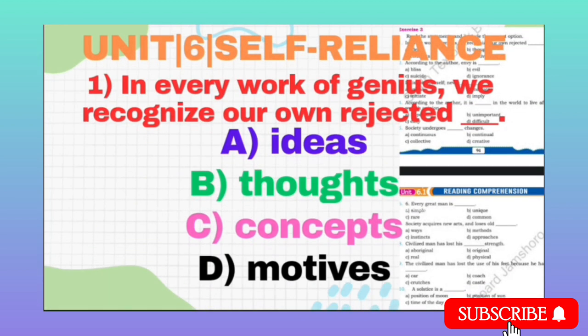MCQ number 1 is: 'In every work of genius, we recognize our own rejected...' — it means in the work of genius, we recognize our own rejected what? Option A: Ideas. Option B: Thoughts. Option C: Concepts. Option D: Motives. The correct option is B, Thoughts.